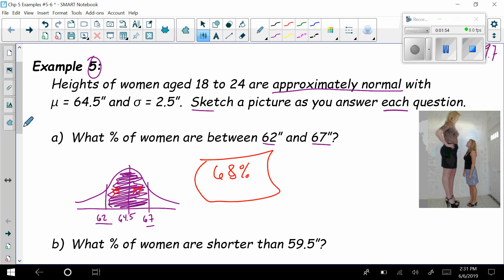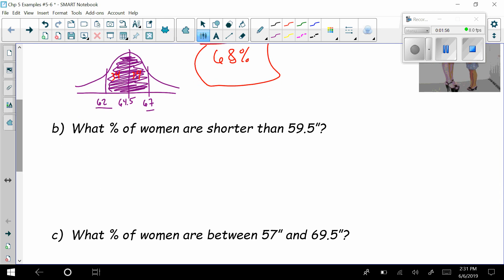Moving on to B. It says, what percentage of women are shorter than 59.5 inches? So here we draw a little curve. 64.5 here. Just found out this is 62. One more down would be 59.5.